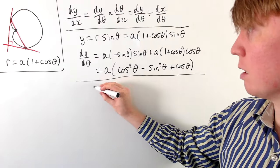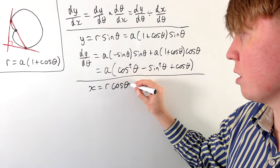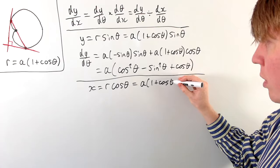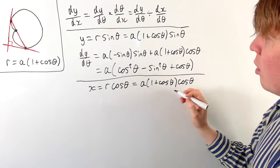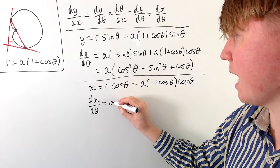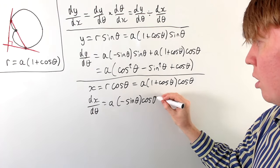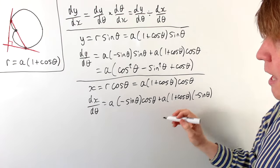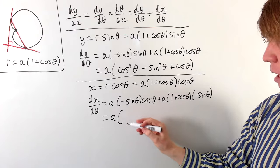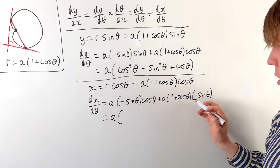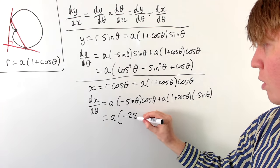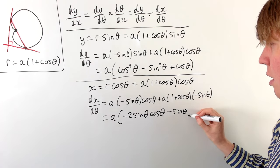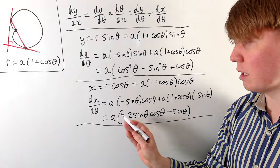For dx/dθ: since x equals r cos θ, we have x equals A(1 + cos θ) cos θ. Differentiating with the product rule gives dx/dθ equals A times [−sin θ · cos θ + (1 + cos θ)(−sin θ)]. Collecting like terms, we get A times [−2 sin θ cos θ − sin θ], which is our expression for dx/dθ.